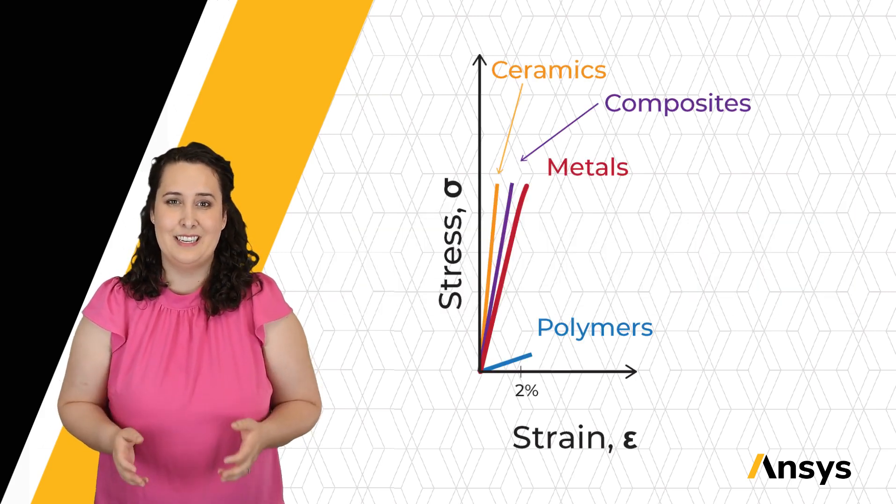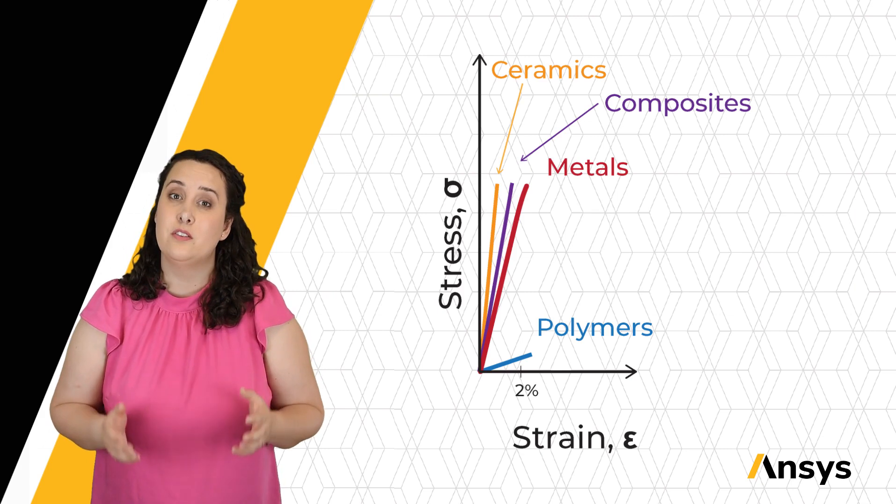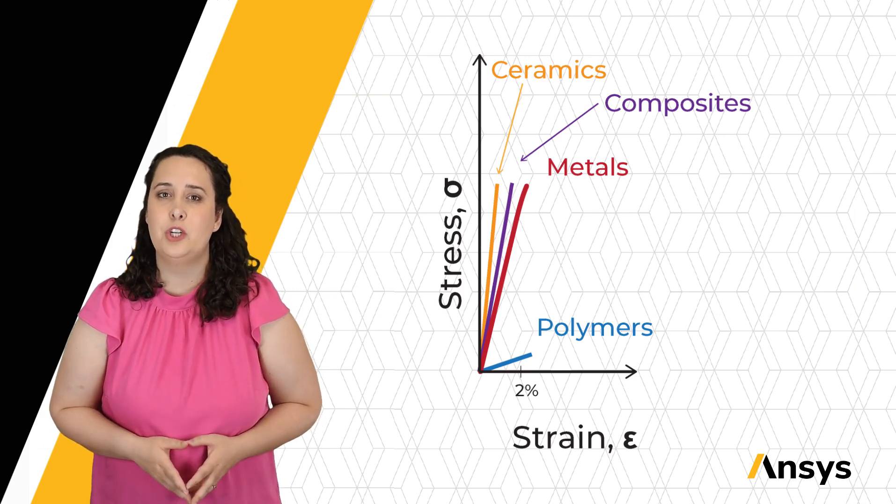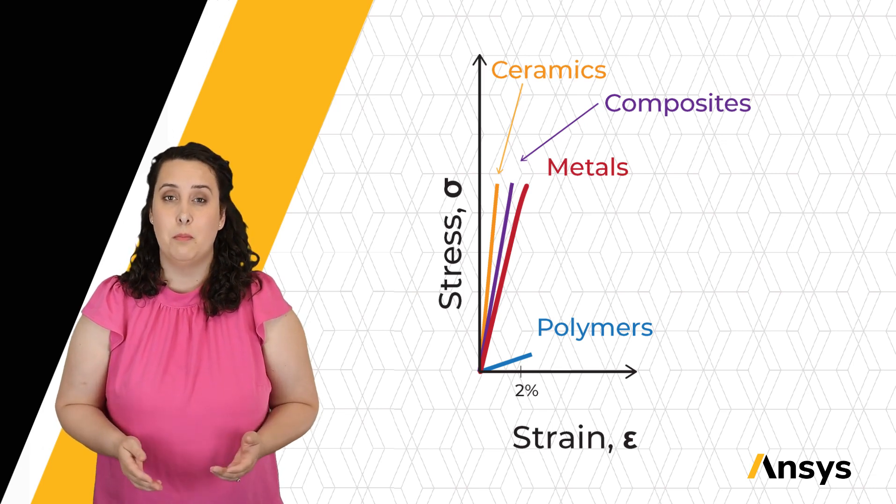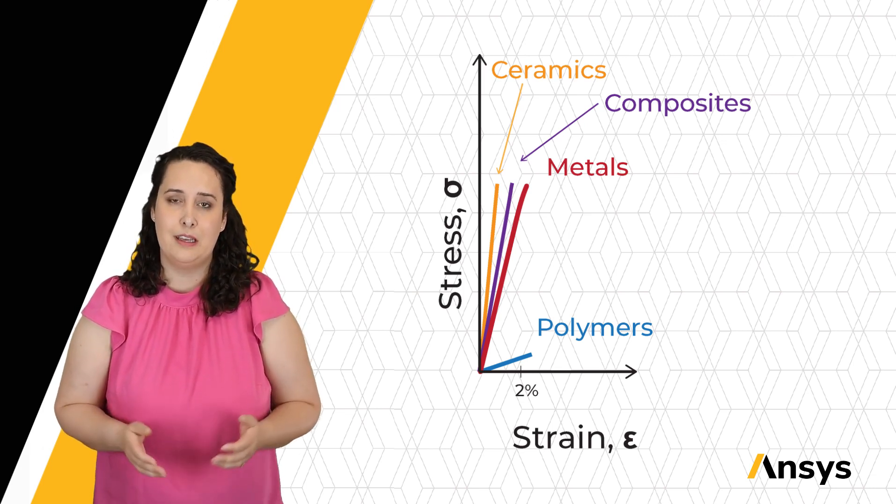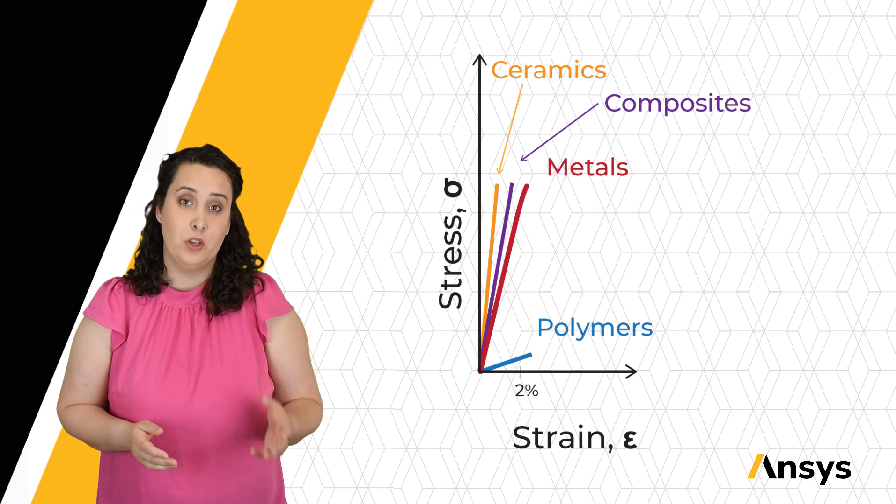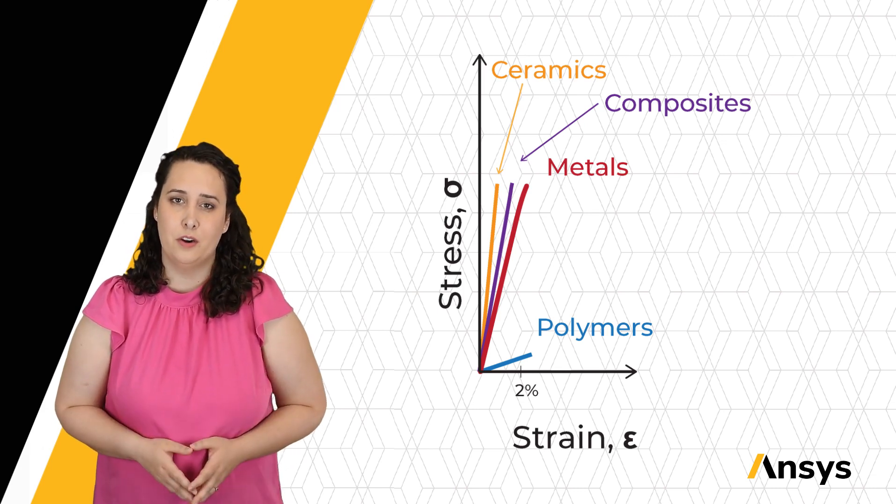This is significantly different, and it shows in the slopes of our curves in our elastic region of our stress-strain curve. Even metallic and covalent bonding are significantly different, and again this shows when I'm looking at my ceramic and metallic curves.